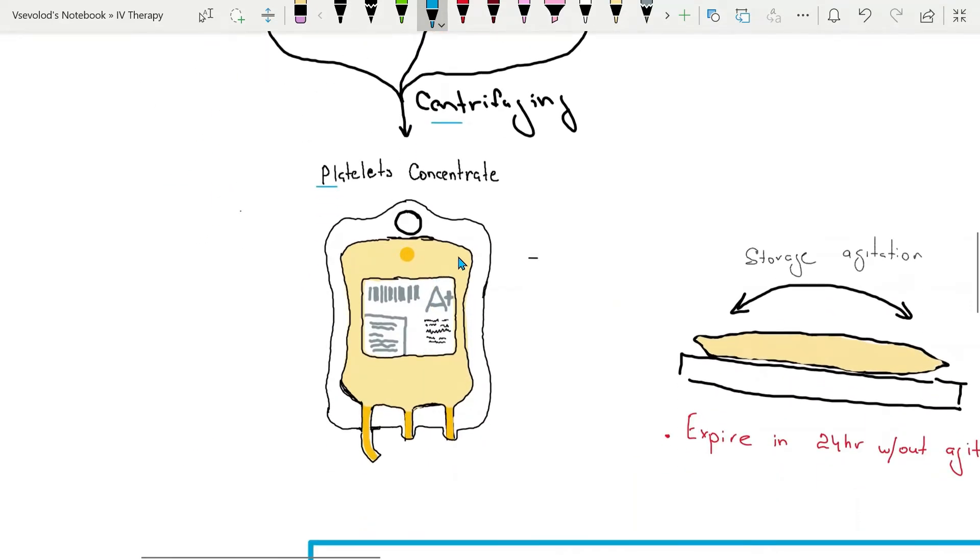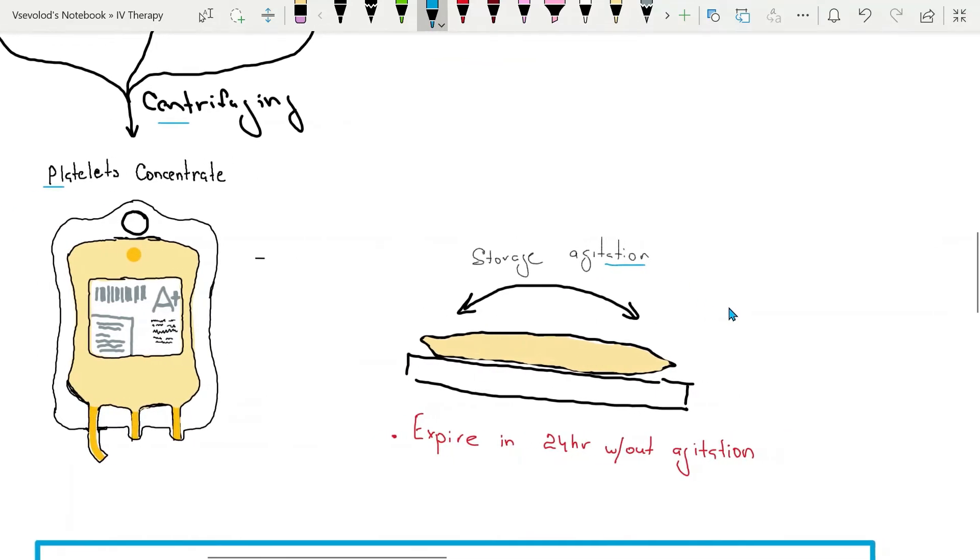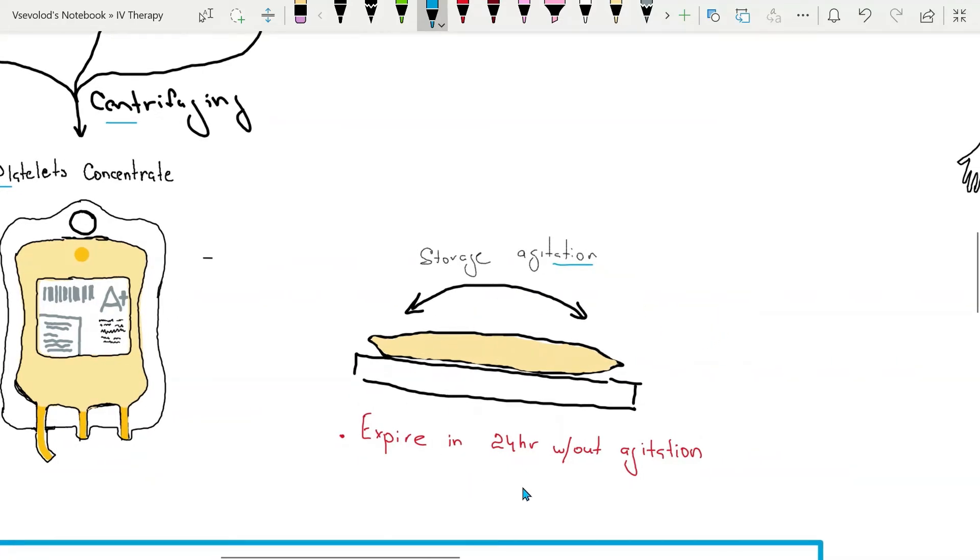To prevent agglutination of the cells, platelets must be continuously agitated during storage. The expiration date is 24 hours without agitation.